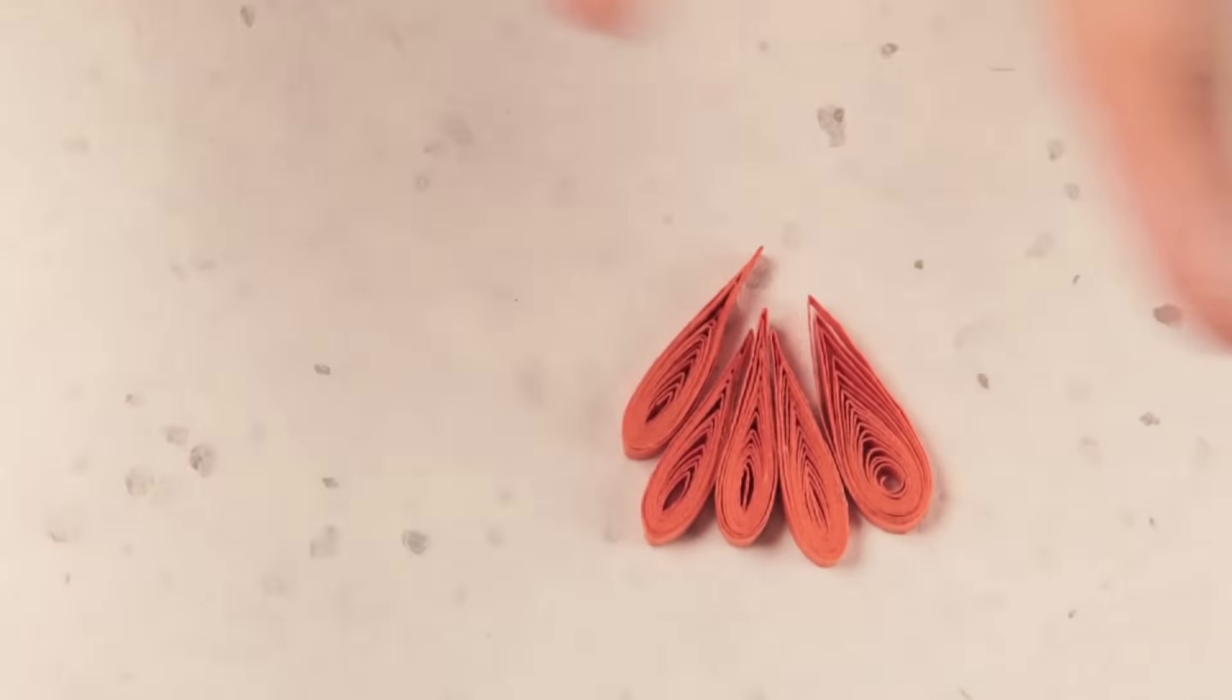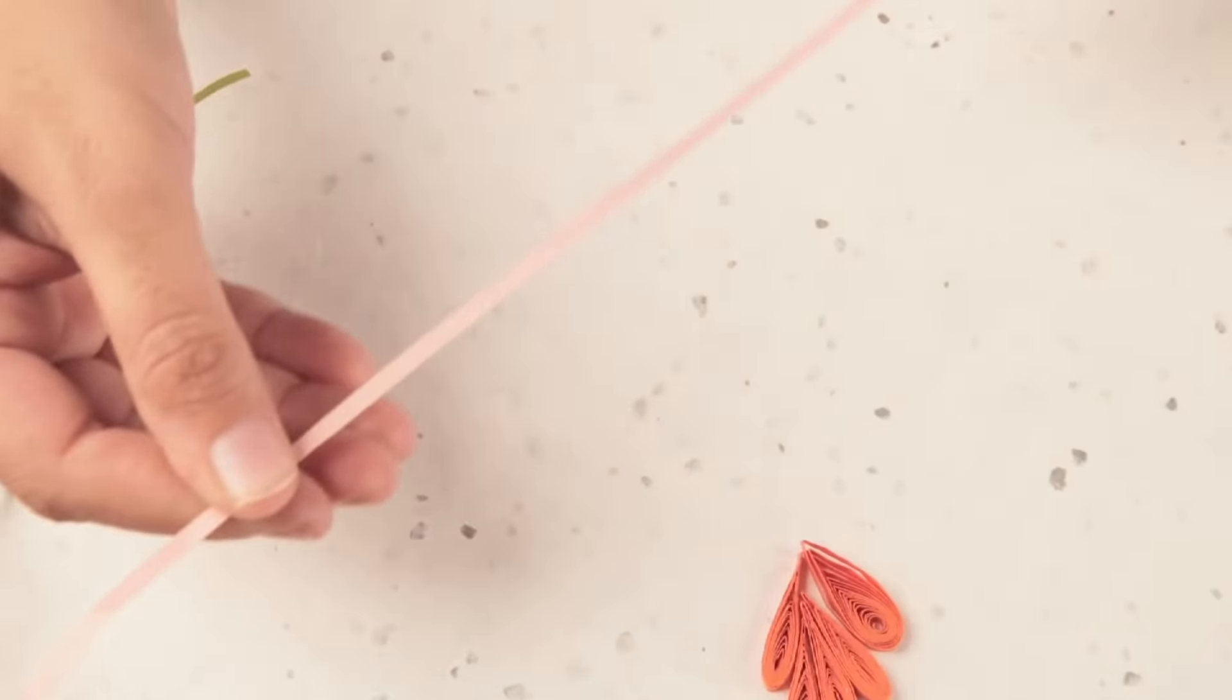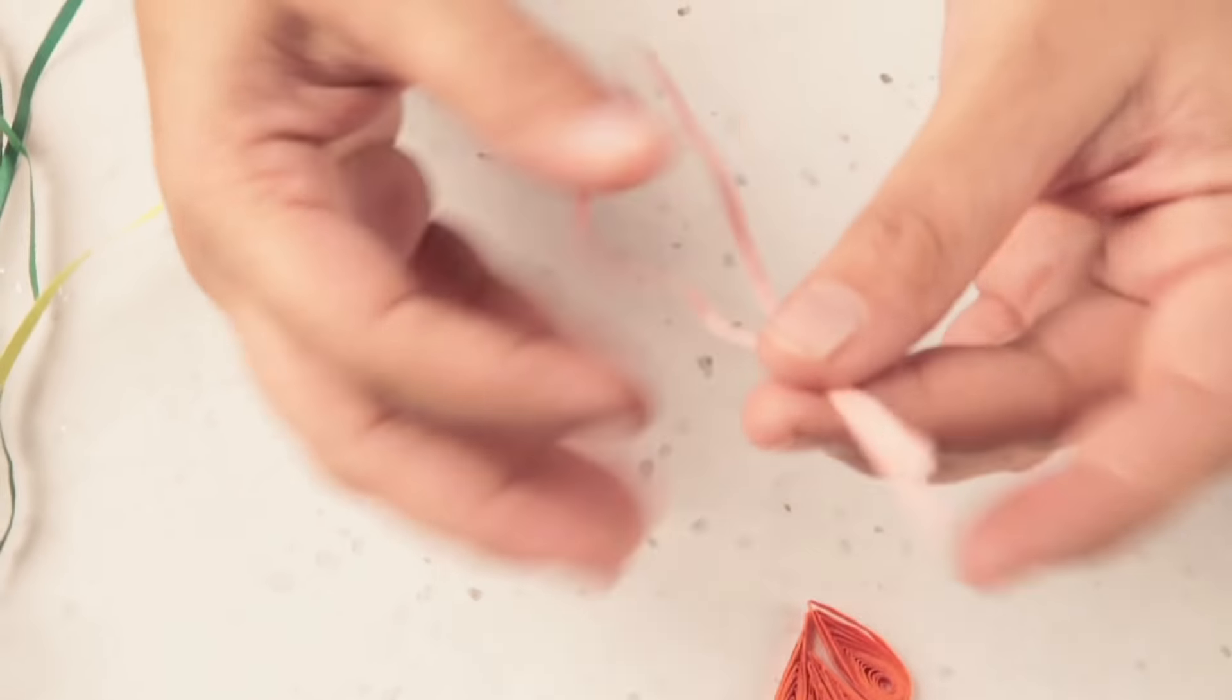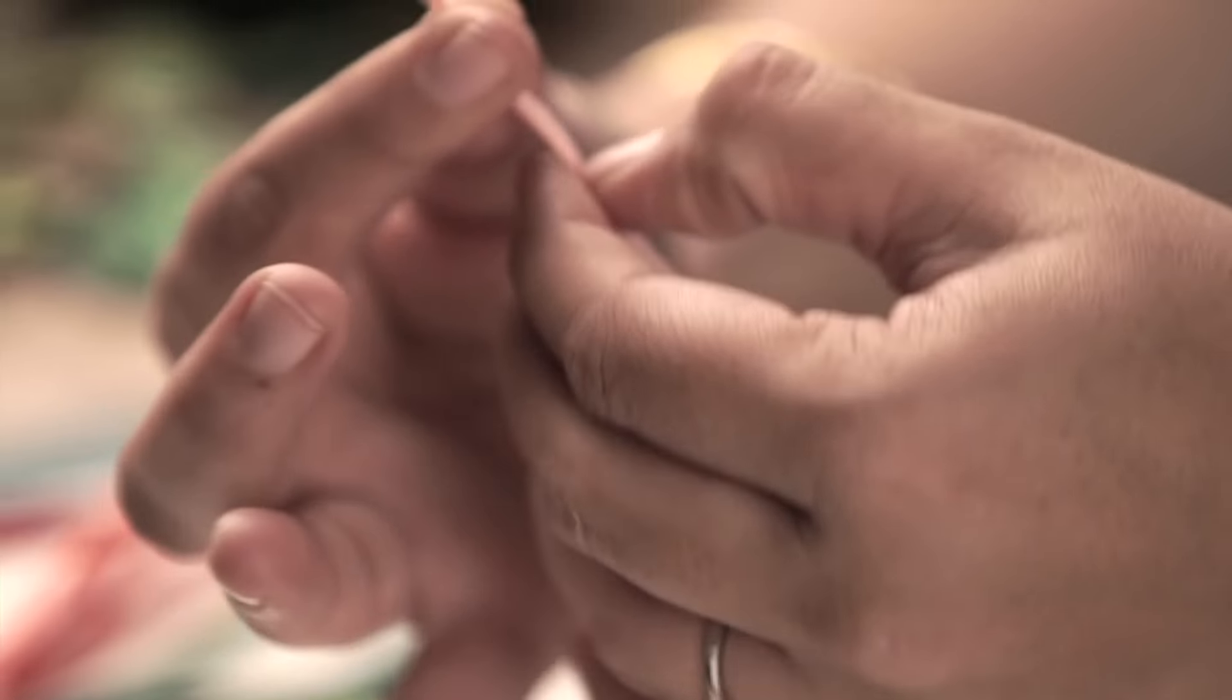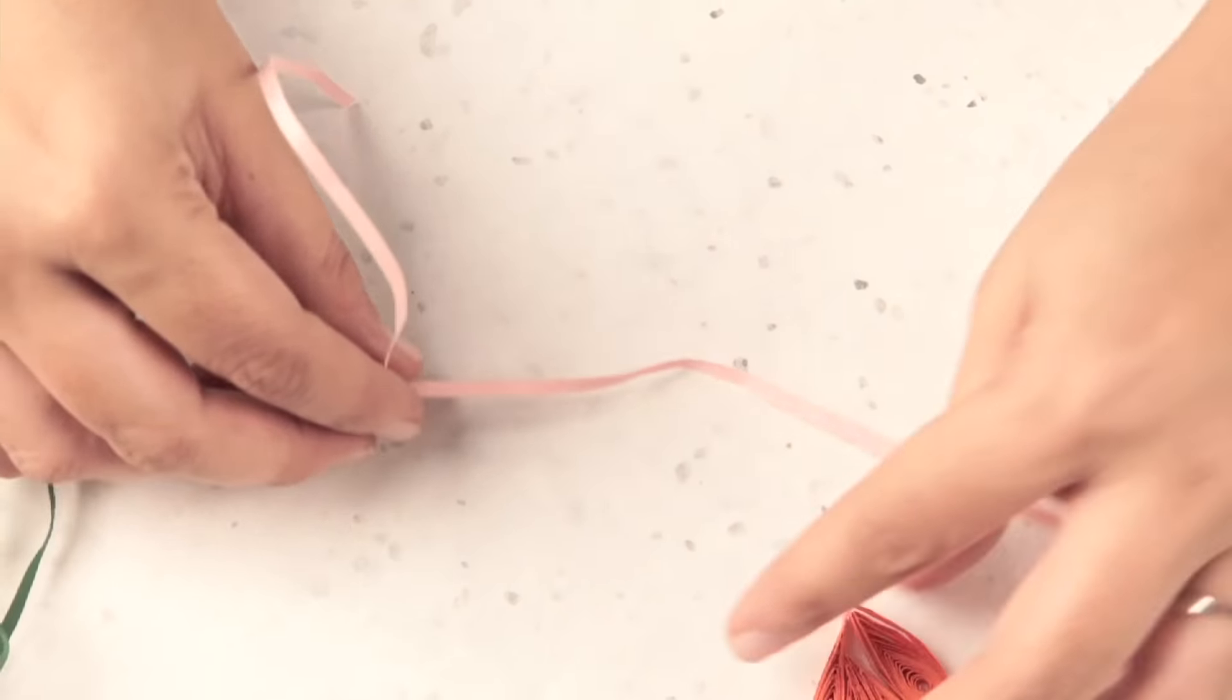Now if you've seen a hibiscus flower, you'll see a little bit of light-colored vein in between the petals. For that, we're using this light pink strip of paper, though you can also use white strips. Fold it in half and stick it together.